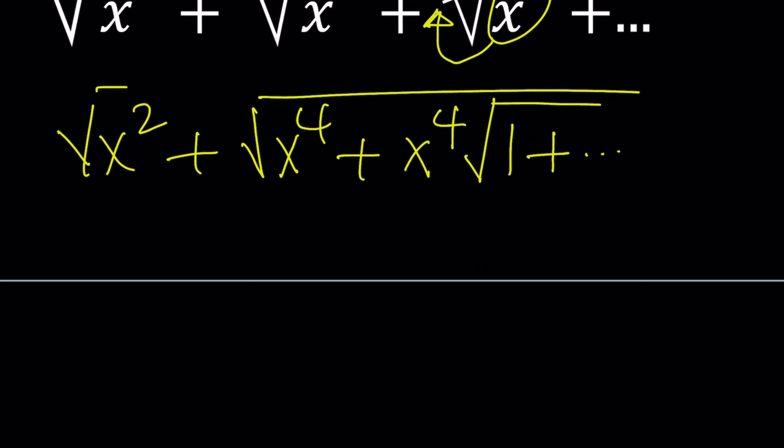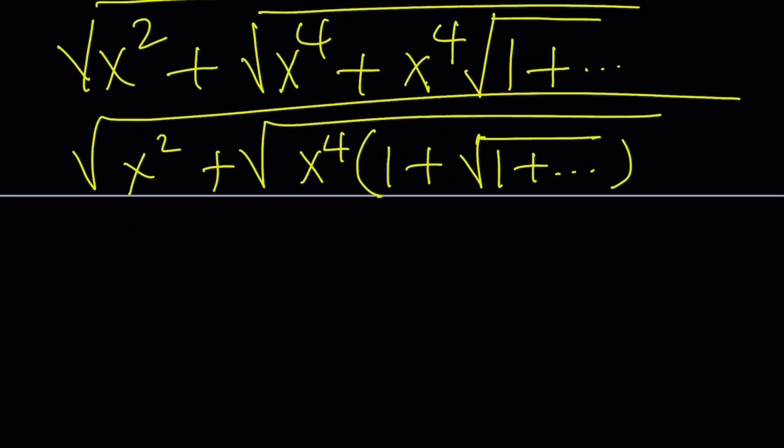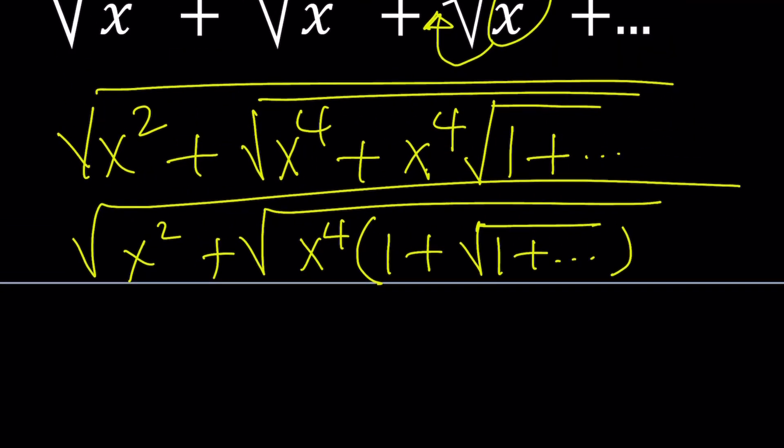Now, here's one thing that I want you to notice. You have x to the fourth plus x to the fourth. So you have a common factor. Which means you can go ahead and factor this out. And if you do, you're going to get 1 plus 1 times this thing, right? And of course, that's going to be under the radical. And that's going to be added to x squared. And that's going to be under another radical.